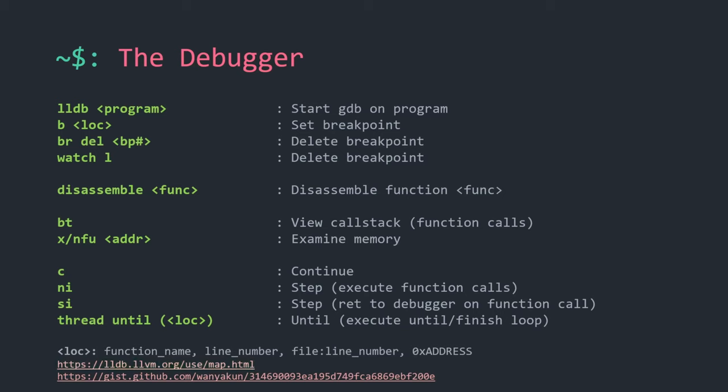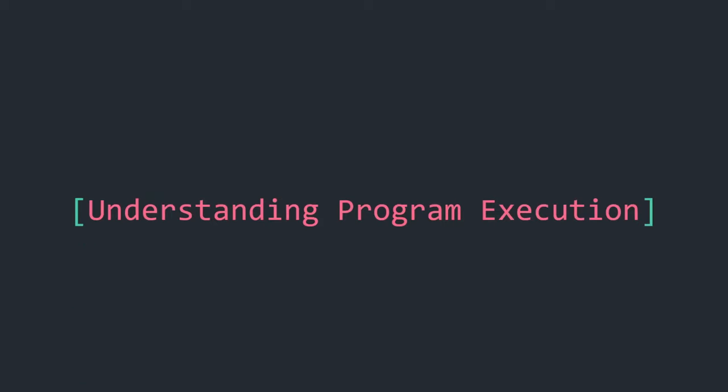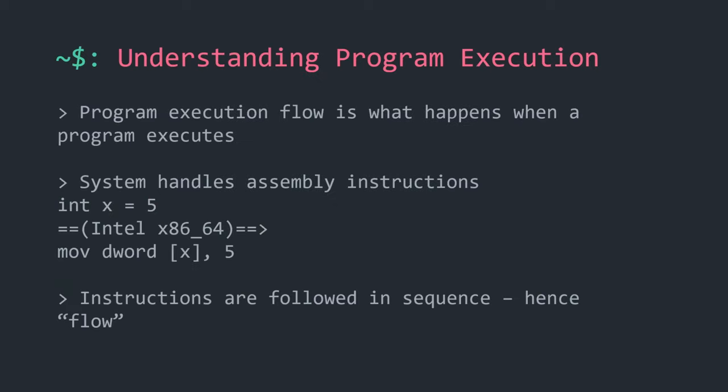Now the heavier part. If anything is unclear, just raise your hand. We'll talk about program execution flow — what happens when your program executes. The system handles assembly instructions, not your high-level code. Assembly instructions are less readable. For example, in high-level code you write 'x = 5', but when compiled to machine code for Intel architecture, it becomes something like a MOV instruction moving the value 5 into the location for x.